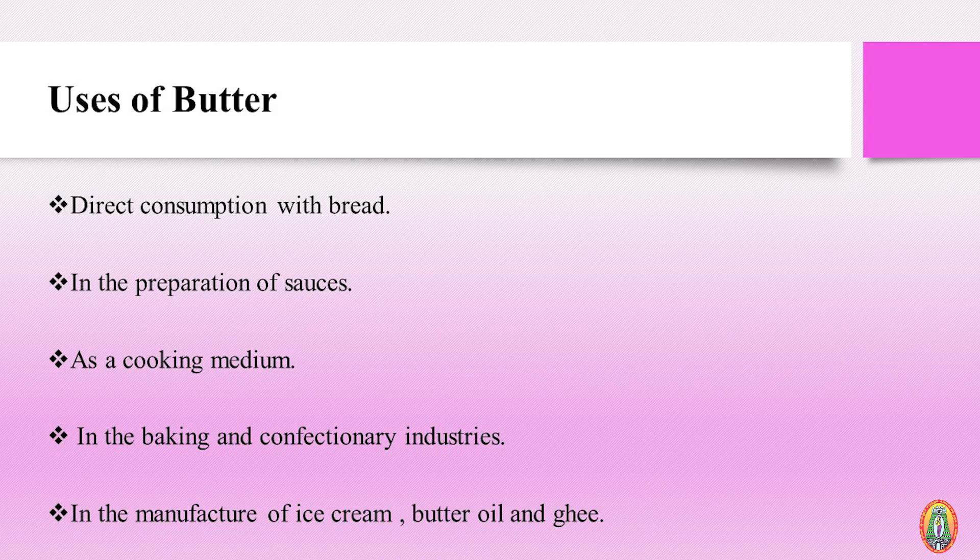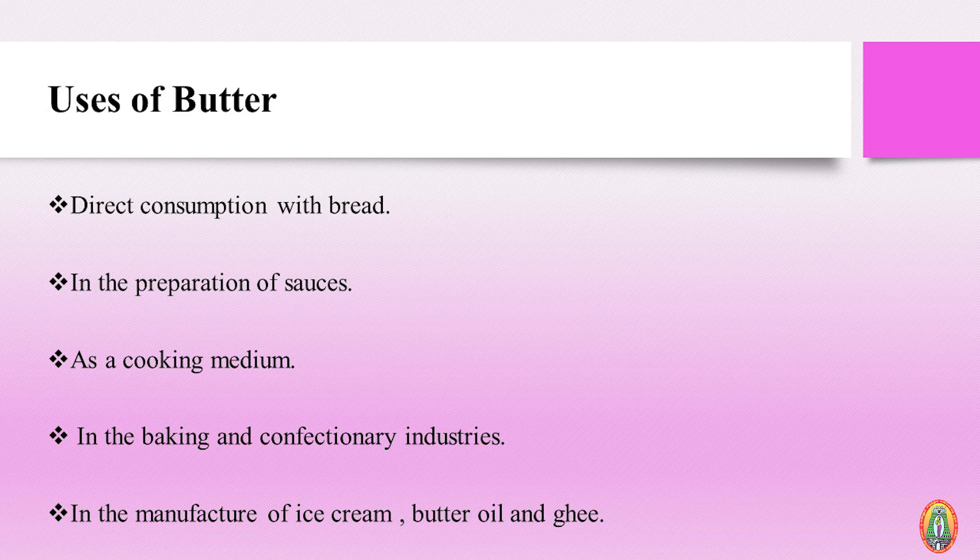Now we will see the usage of butter. Butter gives high energy and is good for our health. It can be consumed directly with bread, chapati, and other dishes. It is also used vastly in baking and confectionery product preparation, in the production of ice cream, and in the production of ghee due to its high milk fat content. Butter is widely used across the dairy industry.